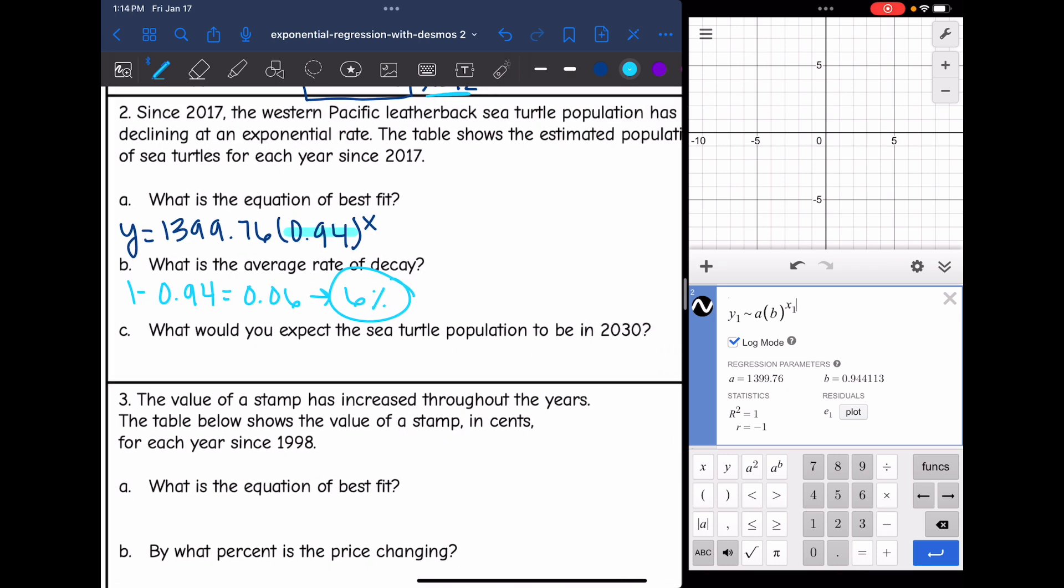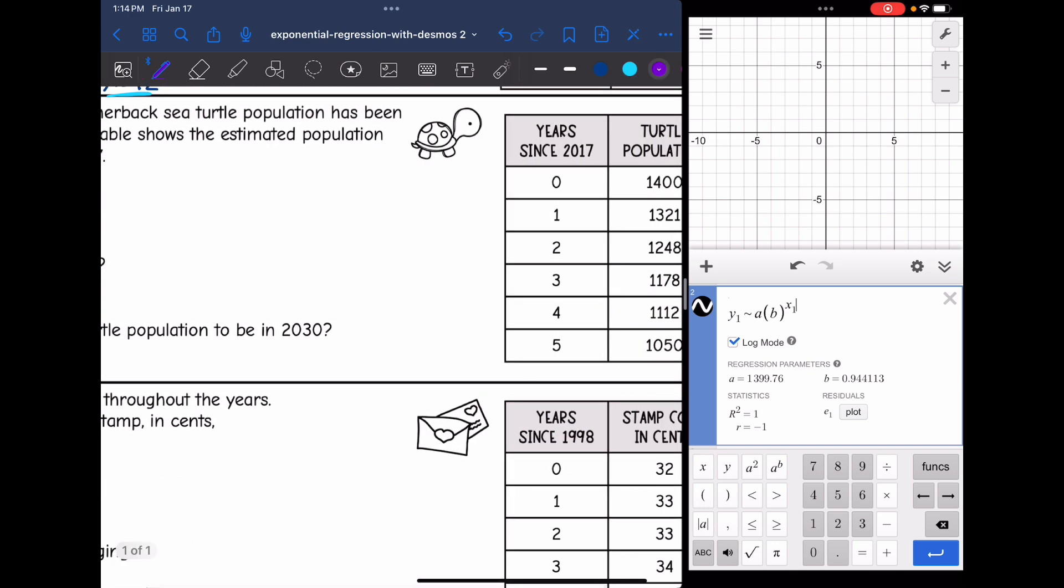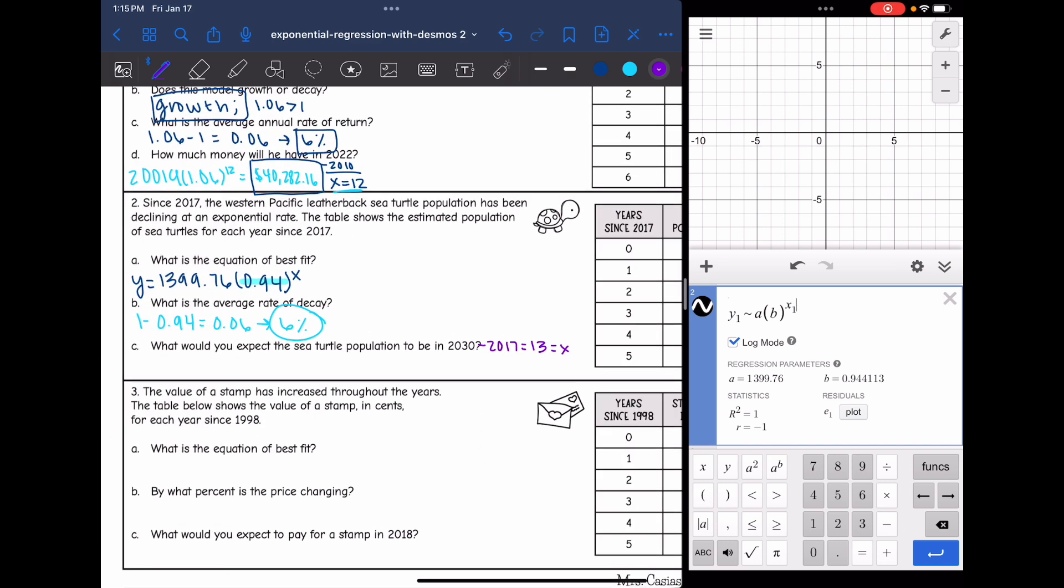And then the last question is, what would you expect the sea turtle population to be in 2030? So my data is years since 2017. So I need to do 2030 minus 2017 to figure out what value I'm going to use for X in my equation. And 2030 minus 2017 is 13. So I'm going to replace X in my equation with 13 to figure this out.